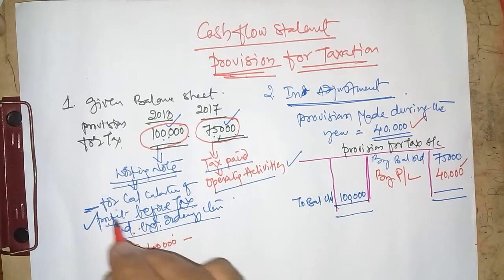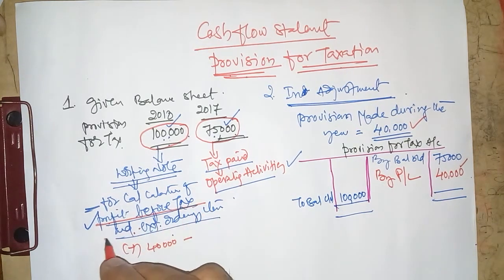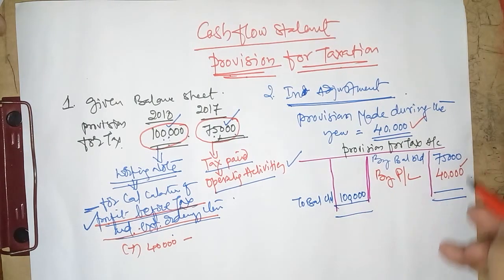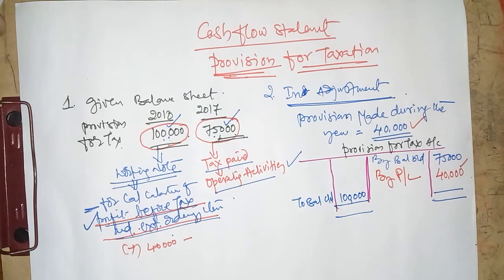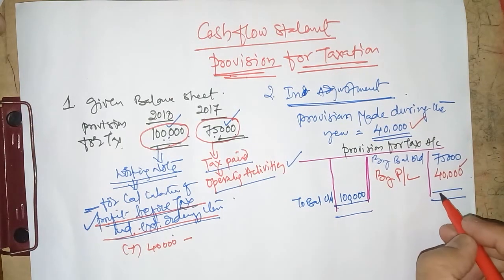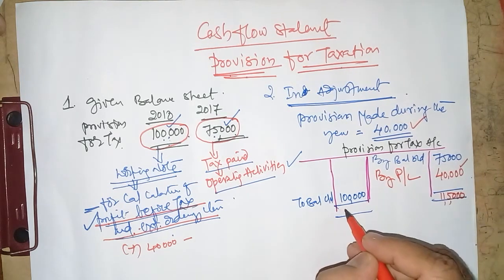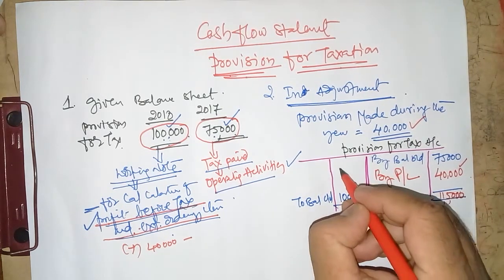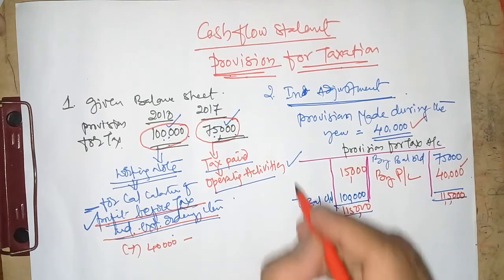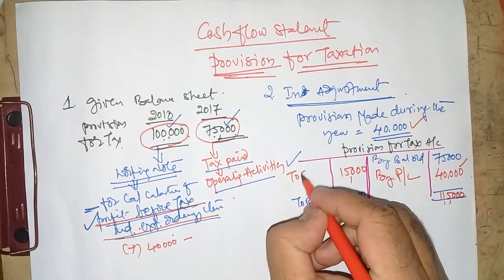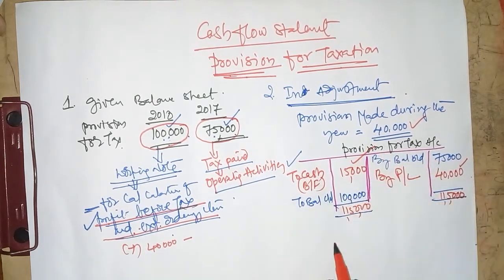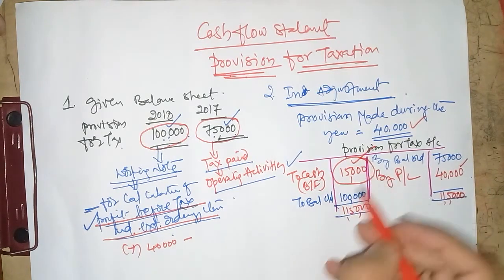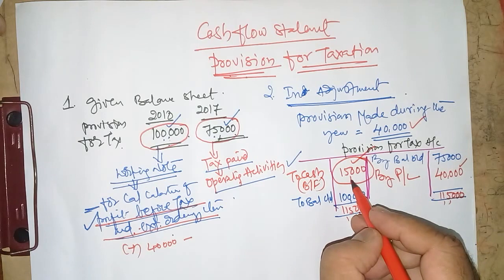We need to close the ledger account. 75,000 plus 40,000 comes to 1,15,000, so both sides total 1,15,000. The balancing figure we are getting is 15,000, and this should be taken as tax paid — the balancing figure to cash. It will be considered under operating activity as tax paid.